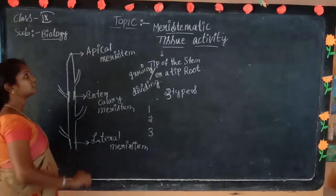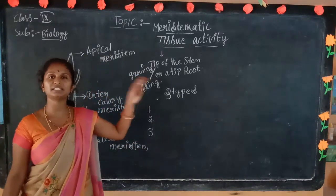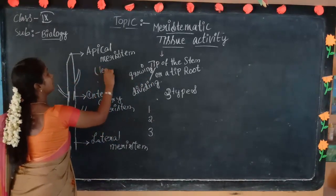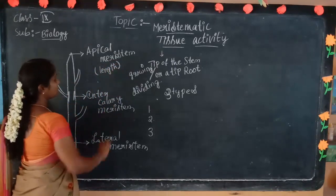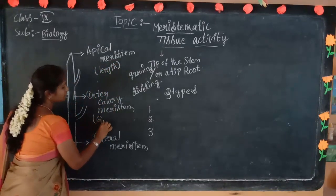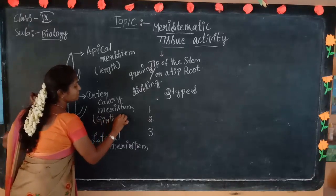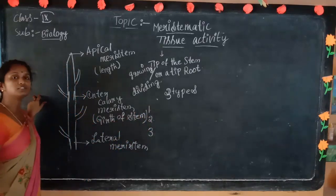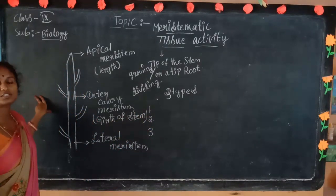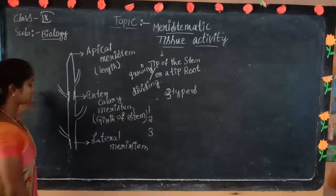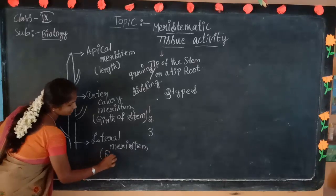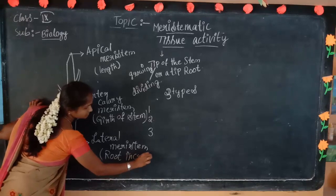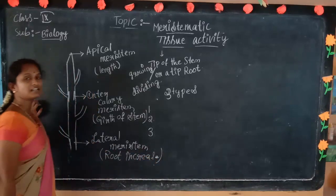These are the three types of tissues present in meristematic tissues. The apical meristem is helpful for increasing the length of the plant. The intercalary meristem is helpful for the girth — also called the width — of the stem, and it is useful for nodes and internodes to produce new stems and new flowers. The lateral meristem is helpful for root increase.